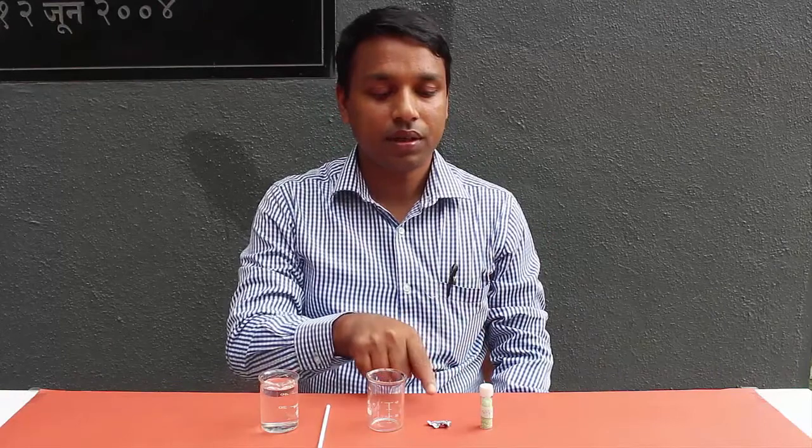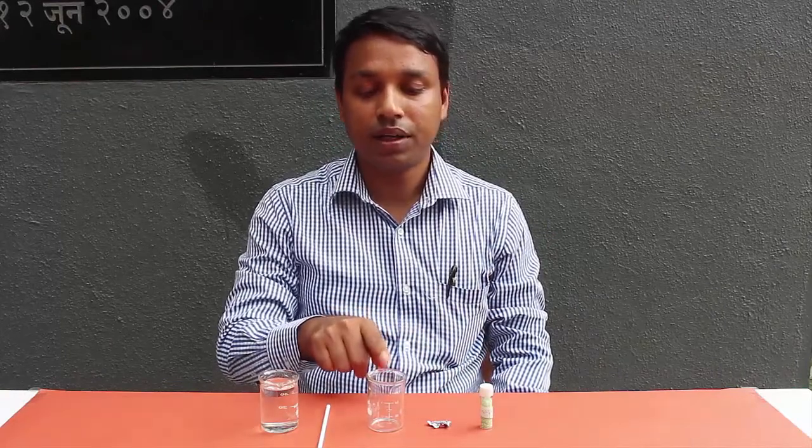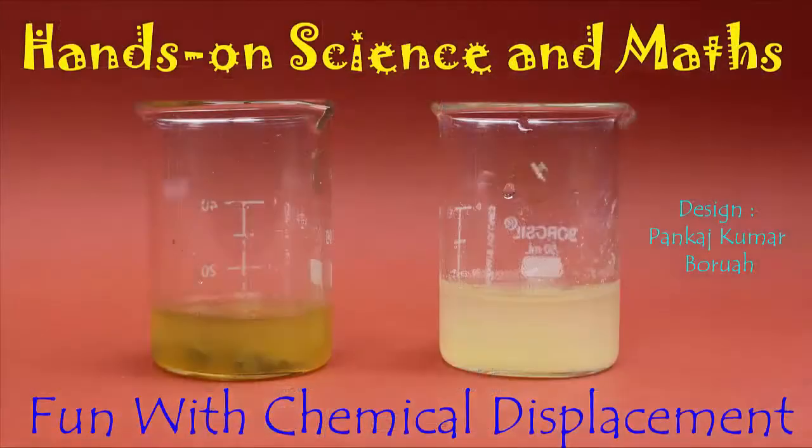In today's chemistry experiment, we will conduct and discuss a displacement reaction. For this, we will need some crystals of ferrous sulfate, pieces of zinc metal, an empty beaker, a stirrer, and a glass full of water.